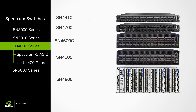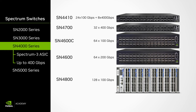Their port layout is as follows. SN4410 has 24 100 Gigabit Ethernet ports, or twice as much when using breakout cables, and eight 400 Gigabits Ethernet ports. SN4700 has 32 400 Gigabit Ethernet ports. SN4600C has 64 100 Gigabit Ethernet ports. SN4600 has 64 200 Gigabit Ethernet ports. SN4800 has 128 100 Gigabit Ethernet ports.